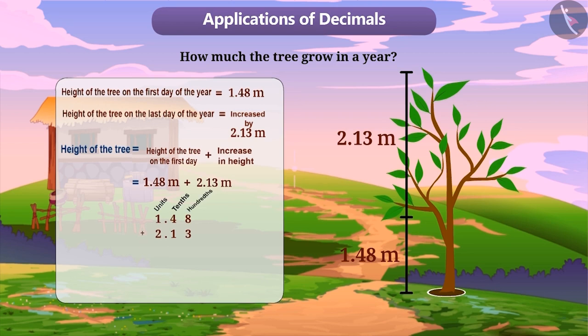Then, we will add them the same way as we add whole numbers. And, we will keep the decimal point in the decimal point column. Therefore, the height of the tree will be obtained as 3.61 metres. That is, the height of the tree at the end of the year will be 3.61 metres.